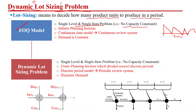But in the dynamic lot sizing problem, the first condition is the same: it is a single level, single item problem. We are not considering the bill of material; we are talking about the end product only with no capacity restriction. However, unlike EOQ, in the dynamic lot sizing model the planning horizon is finite and divided into several discrete time periods.